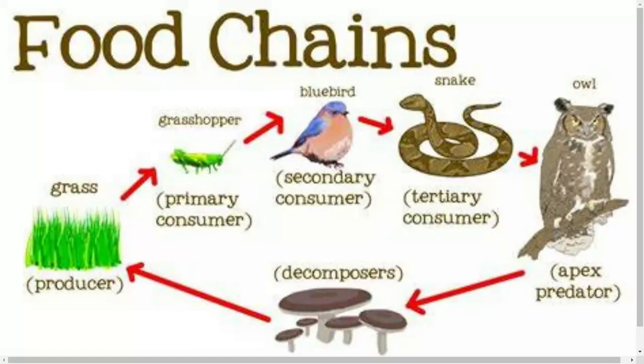Another example of a food chain: grass is eaten by a grasshopper, the grasshopper is eaten by a bluebird, the bluebird is eaten by a snake, and the snake is eaten by an owl. When the owl dies, decomposers absorb the nutrients from it and return those nutrients to the plant.